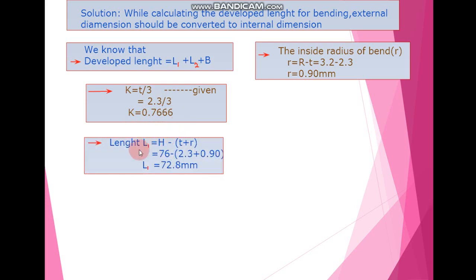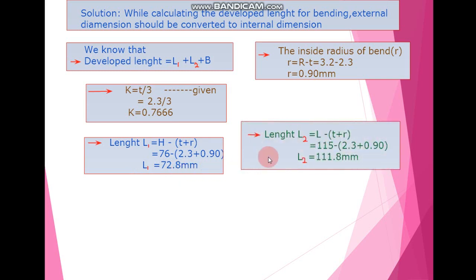Next, we calculate length L1. The formula for L1 is capital H minus the quantity (small t plus small r). After substituting all values, we get L1 equal to 72.8 mm.